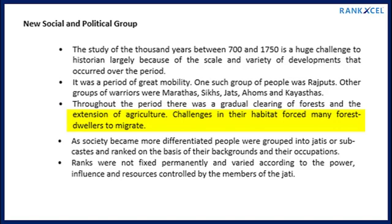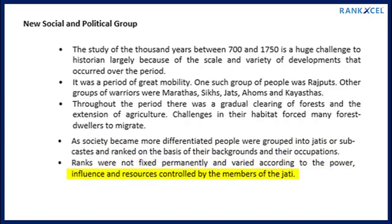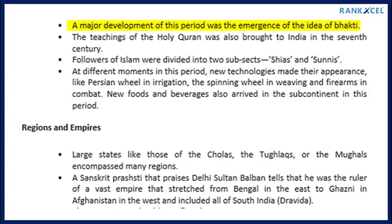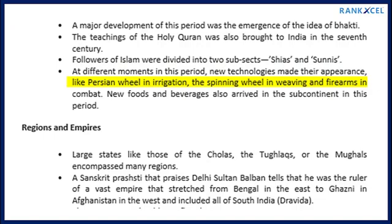Throughout the period there was a gradual clearing of forests and the extension of agriculture. Challenges in their habitat forced many forest dwellers to migrate. As society became more differentiated, people were grouped into jatis or subcastes and ranked on the basis of their backgrounds and occupations. Ranks were not fixed permanently. A major development of this period was the emergence of the idea of bhakti. The teachings of the Holy Quran were also brought to India in the 7th century. Followers of Islam were divided into two subsects: Shias and Sunnis. New technologies appeared, such as the Persian wheel in irrigation, the spinning wheel in weaving, and firearms in combat.